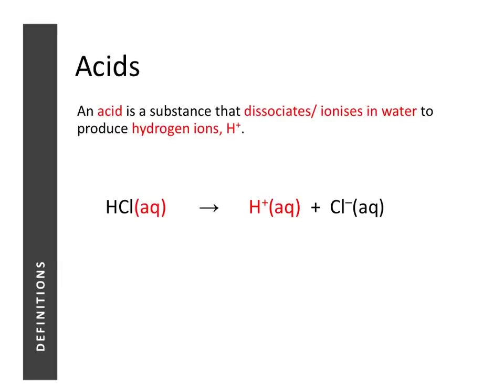An acid is a substance that dissociates or ionizes in water to produce hydrogen ions. There are three key phrases in the definition. The first is hydrogen ions — an acid produces hydrogen ions, and it is these hydrogen ions that give acids the characteristics that we know of.